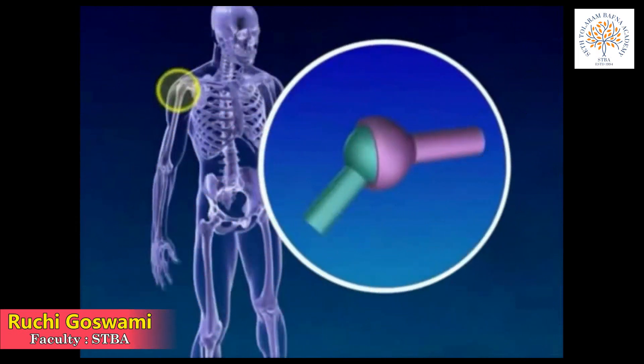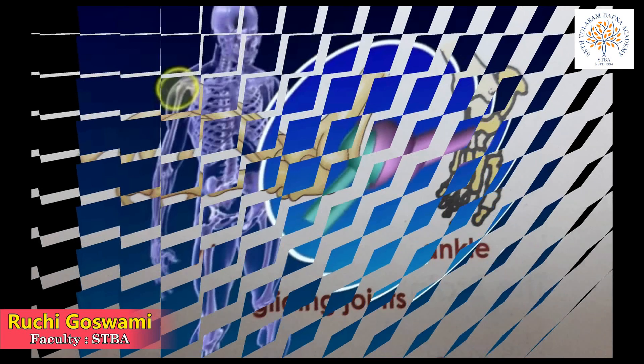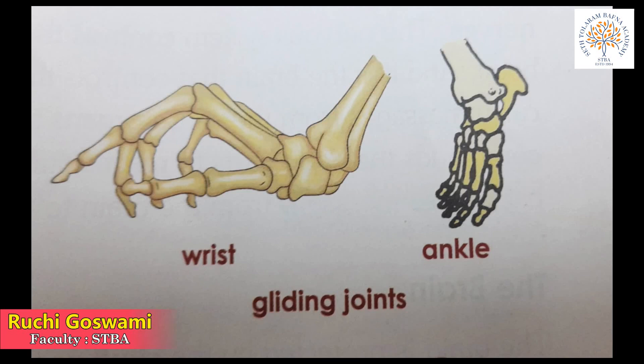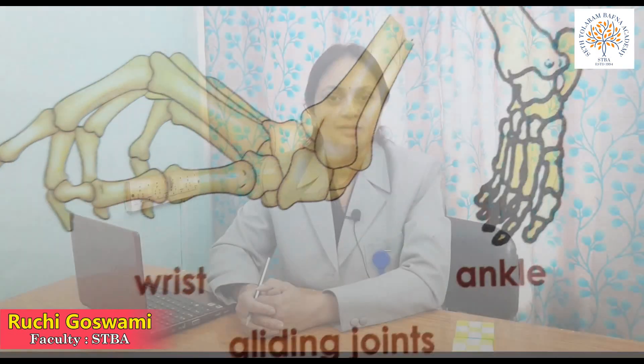Another type is the ball and socket joint, which consists of a bone with a ball that fits into a socket or cup in another bone. The shoulder and hip girdles have these joints. There are also pivot joints, formed in the wrist and ankle where the bones glide or slide over one another. The vertebrae also have this kind of joint.